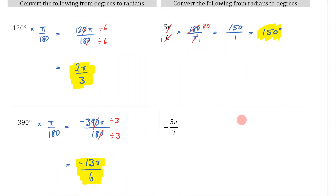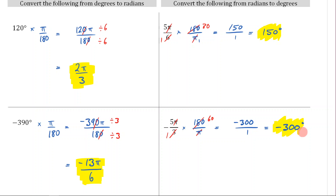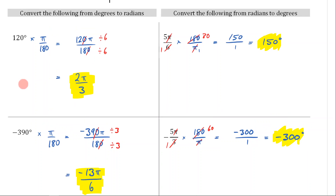For the last example, we again multiply by 180/π. The π cancels, and 3 and 180 are both divisible by 3, leaving 60. Since the original angle was negative, the answer must also be negative. 5 × 60 = 300, so the answer is −300 degrees. That is how you convert between radians and degrees.